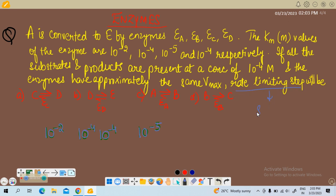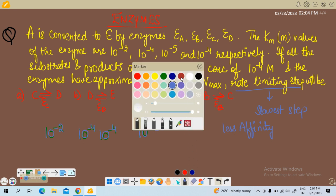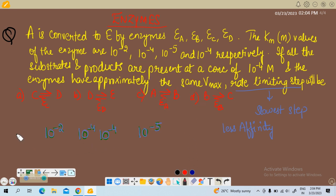So rate limiting step is the slowest step. So rate limiting step will be that whose affinity will be less. So now out of these Km values we need to find the affinities first.